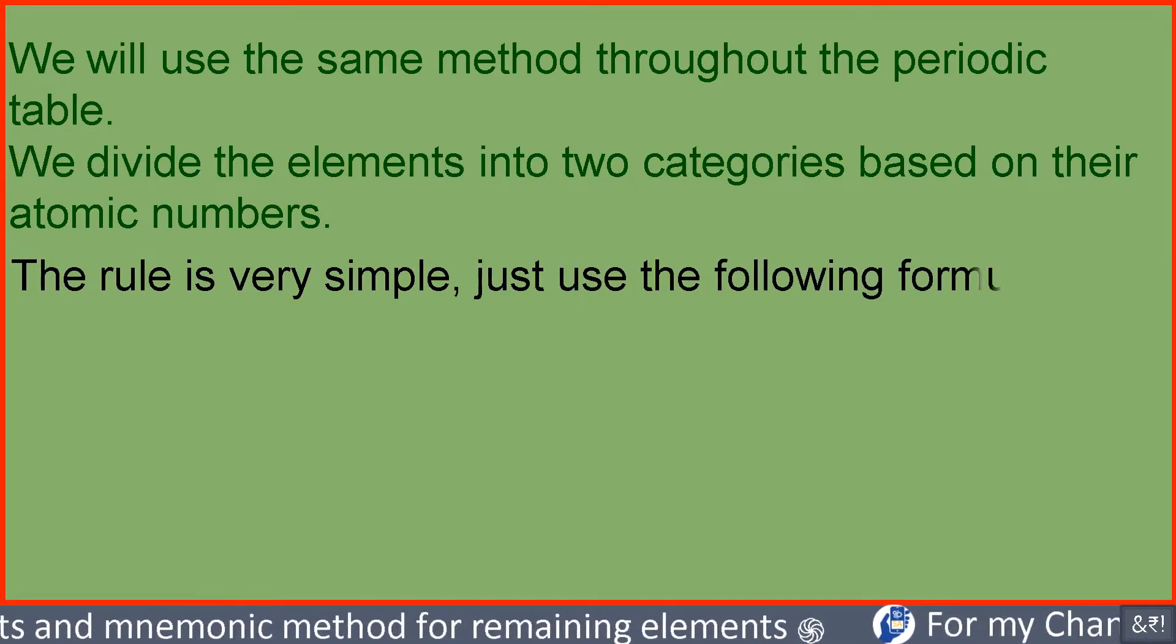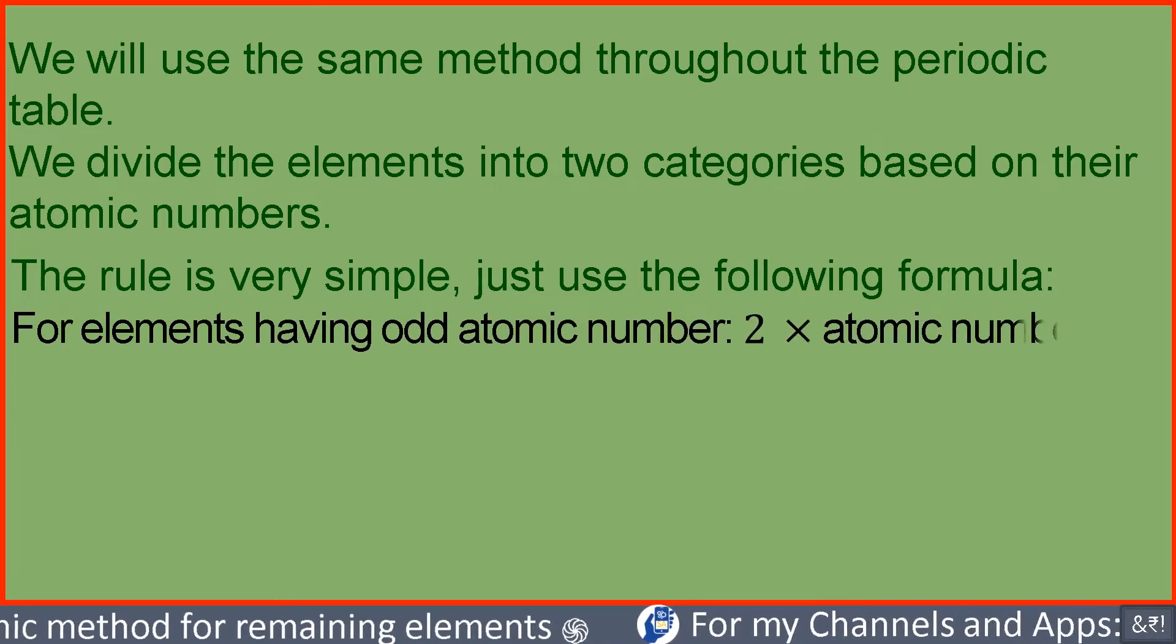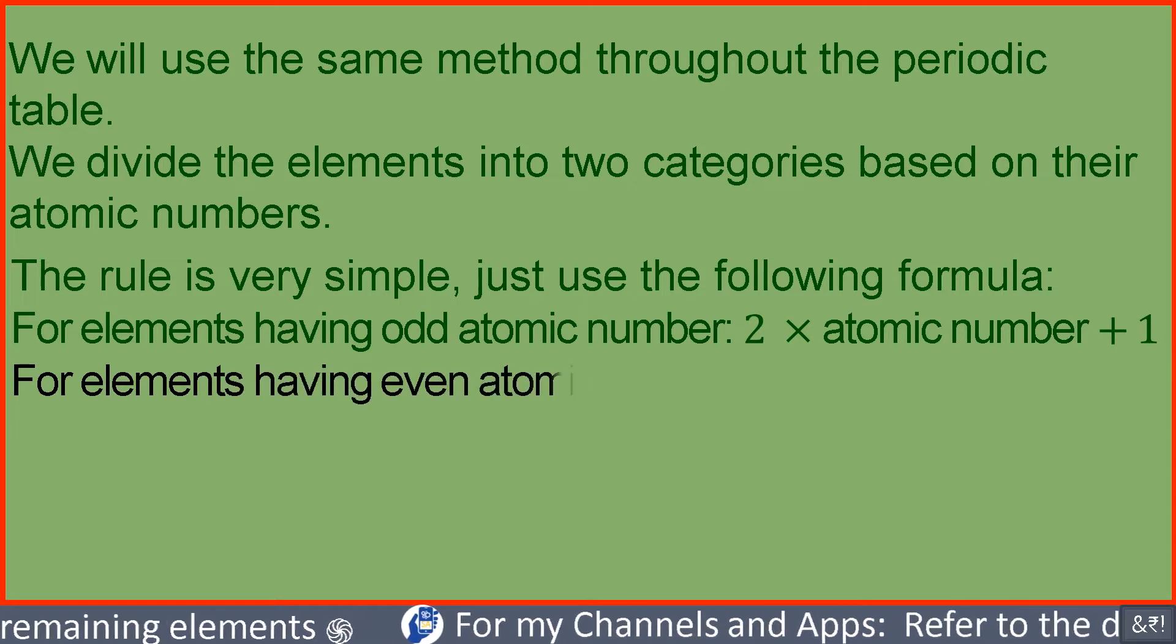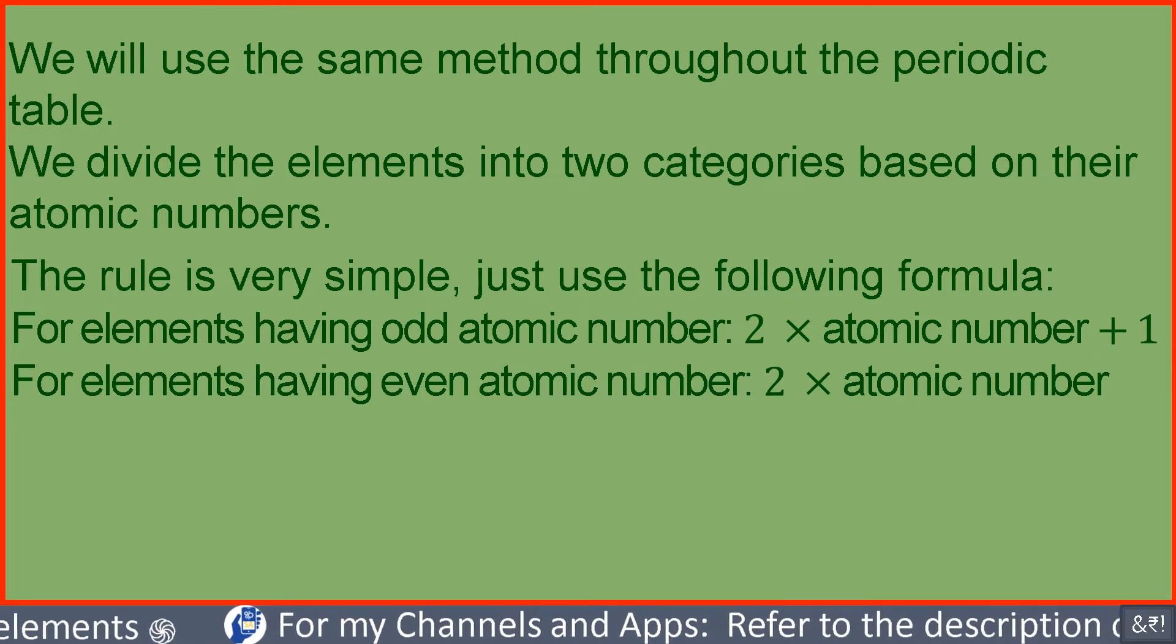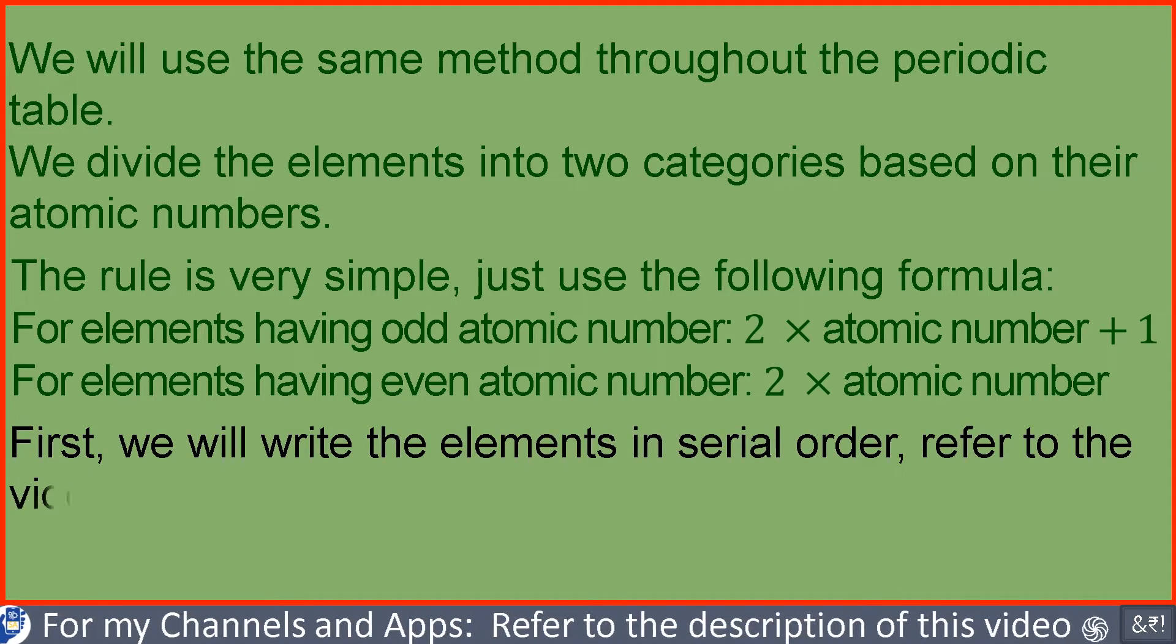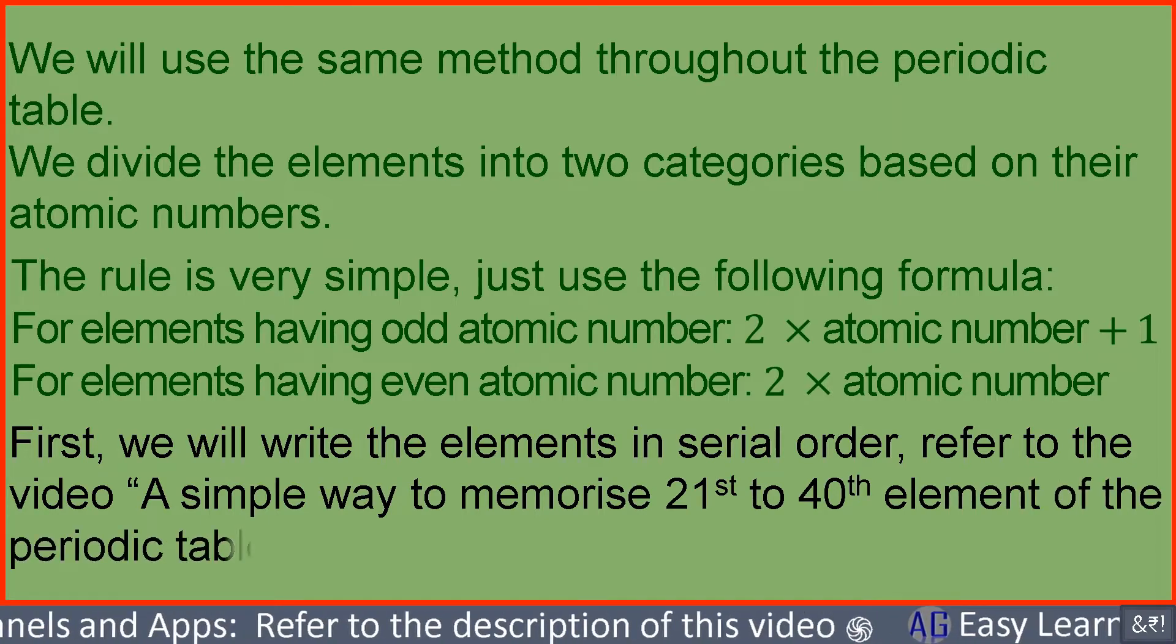Just use the following formula. For elements having odd atomic number, 2 multiplied by atomic number plus 1. For elements having even atomic number, 2 multiplied by atomic number. First, we will write the elements in serial order. Refer to the video a simple way to memorize 21st to 40th element of the periodic table.